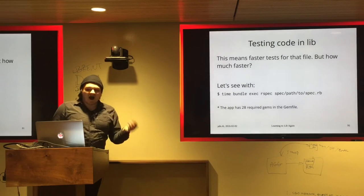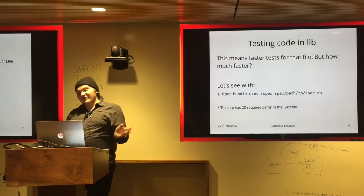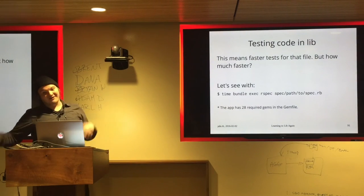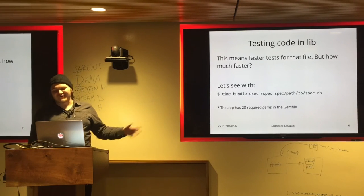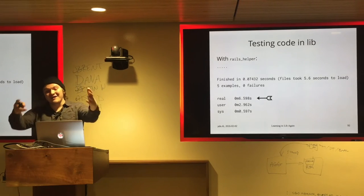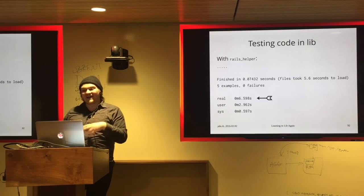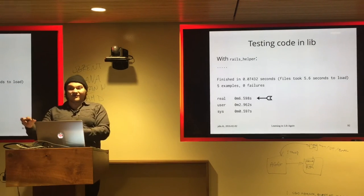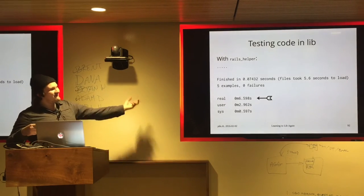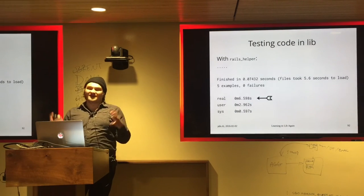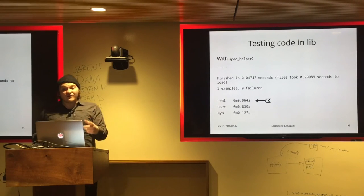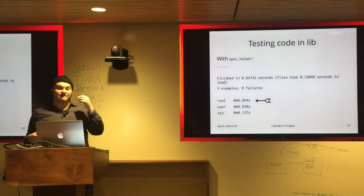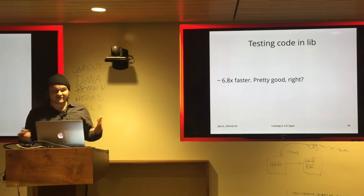How much faster? Using the time command without Spring on an app with 28 required gems: with rails_helper, the test ran in 0.07 seconds but took 5.6 seconds to load — 6.6 seconds total real time. With spec_helper, the loading takes less than a second, so everything runs in under a second. That's a 6x speed increase. Even with Spring, it still takes 3.8 seconds — still 4 times slower than spec_helper.